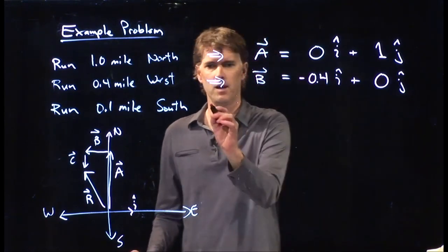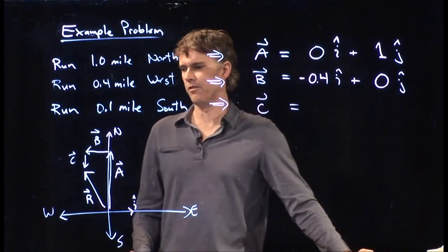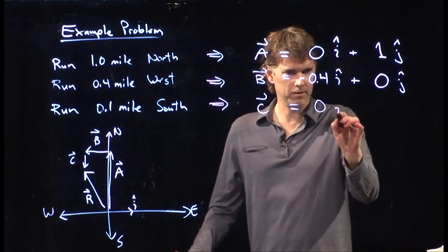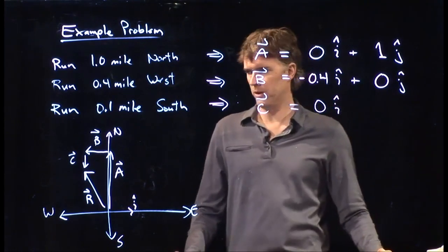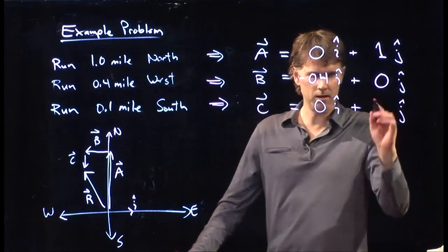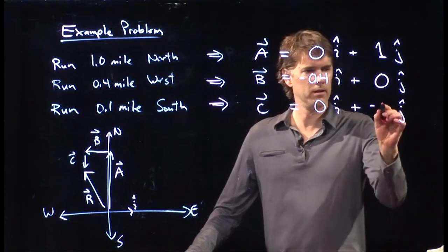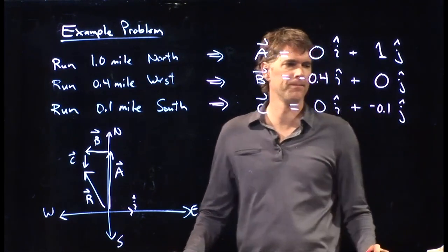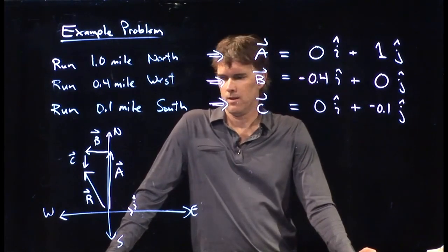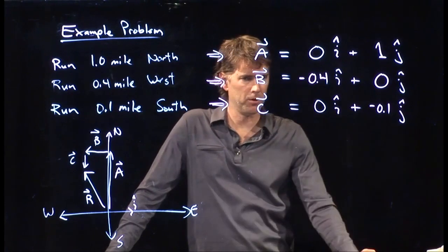Good. All right. Almost there. Finally, we got to do vector c. What is vector c? Well, we know that it's not moving in the east or west. So that first term is 0. And now, based on what we just did, what should I put there? You guys know the answer to this. It's negative 0.1. Okay. All right. Those are our three vectors written out in this component form.